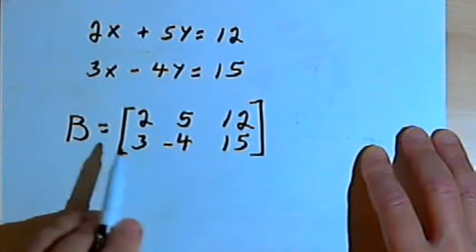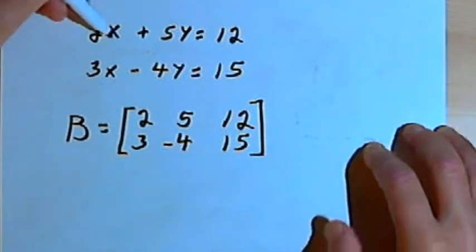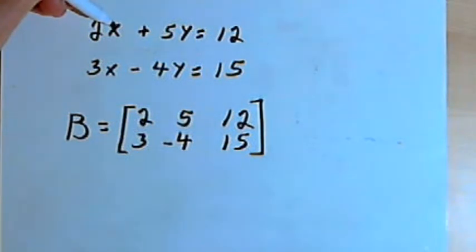And that would be a representation—matrix B is a representation of the information that I had in those two equations. Okay, let's talk about terminology.